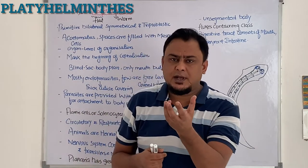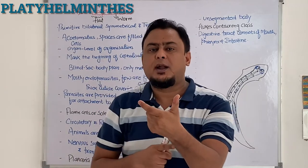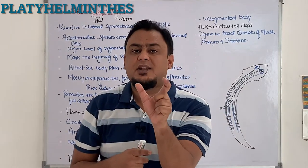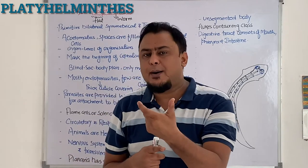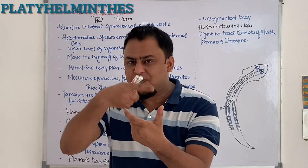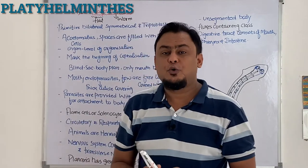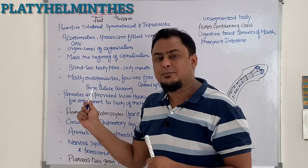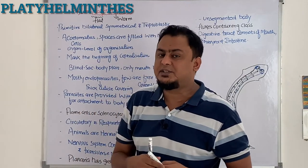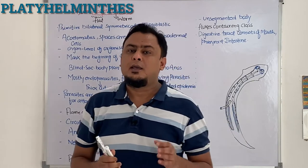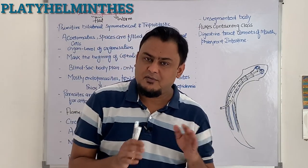Take one apple. If you cut it into two pieces, that is bilateral symmetry. But if you cut the same apple into four pieces, that is radial symmetry. Platyhelminthes is a primitive bilateral symmetrical phylum.